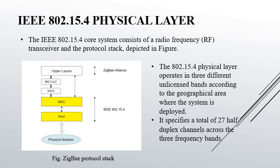The IEEE 802.15.4 physical layer — the core system consists of a radio frequency transceiver and the protocol stack as depicted in the figure. The physical medium is connected to the physical layer, where the physical layer and MAC are operated with IEEE 802.15.4, whereas the upper layers above the MAC layer use the ZigBee protocol. The 802.15.4 physical layer operates in three different unlicensed bands according to the geographical area where the system is deployed. Spread spectrum techniques are mandatory to reduce the interference level in shared unlicensed bands.